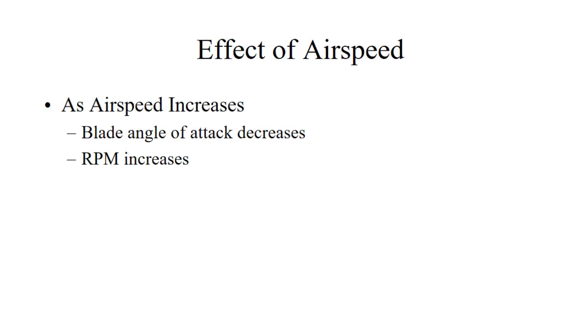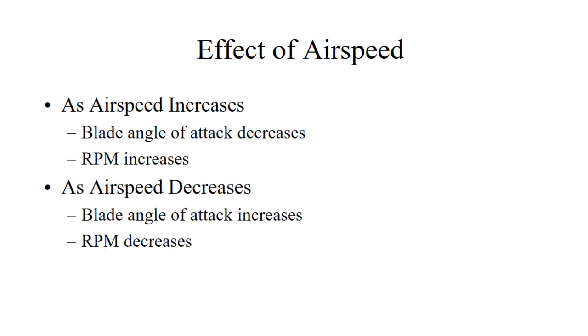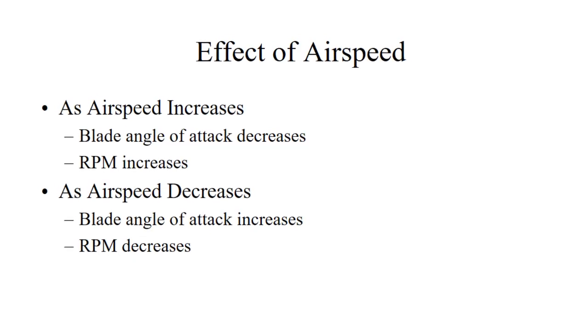One of the things that is important and not discussed enough during primary training is the effect of airspeed on a fixed pitch propeller. As airspeed increases, blade angle of attack decreases and RPM increases. And this has a dramatic effect, especially during a level off. As airspeed decreases, blade angle of attack increases and RPM decreases. So the bottom line here is that the forward airspeed of the airplane has a direct effect on the RPM of the engine with a fixed pitch propeller.